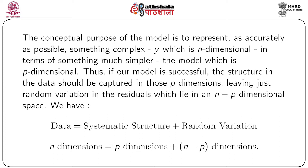In essence, the data is divided into two parts: one is the systematic or structured part, and the other is variation due to randomness. This randomness is not something we can control, so we try to minimize it, while the systematic part is what we can control. We try to write it in terms of a linear combination of p different coefficients. So we have n dimensions of the data, which equals p dimensions when written in terms of the coefficients β, plus n − p dimensions attributed to the random component.